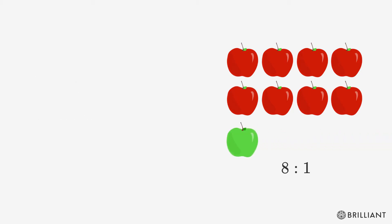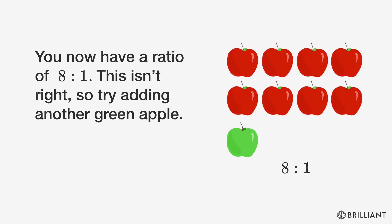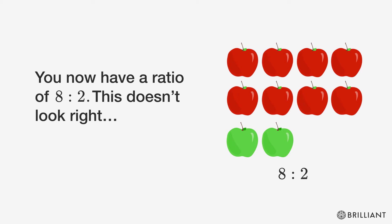So let's add one green apple. You now have a ratio of 8 to 1. This isn't right, so try adding another green apple. You now have a ratio of 8 to 2.